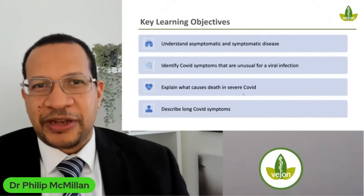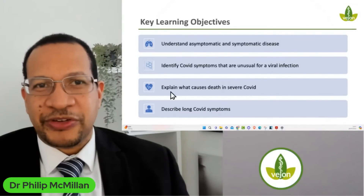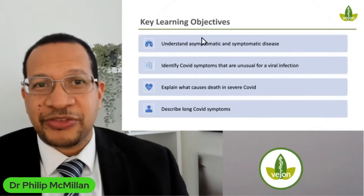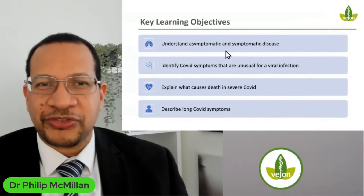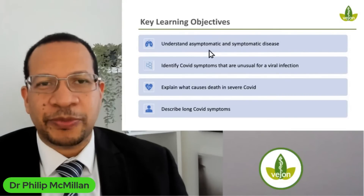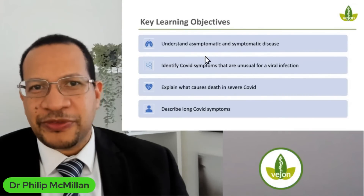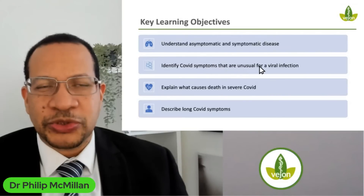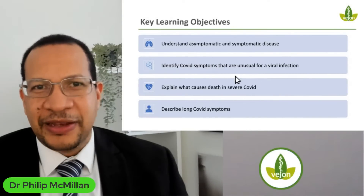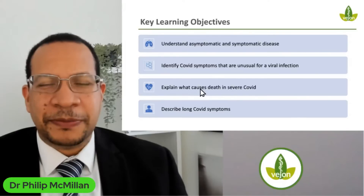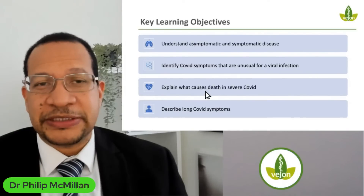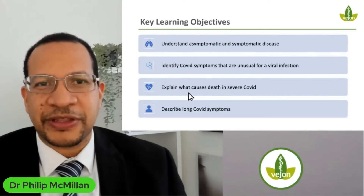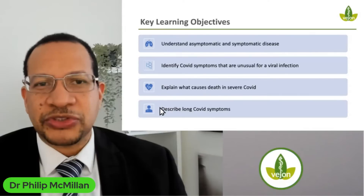The key things I'll be focused on in this presentation: the difference between asymptomatic and symptomatic disease, which causes a lot of confusion. The symptoms that are characteristic for COVID and somewhat unusual are covered throughout the presentation. We're going to explain why people die in severe COVID-19 — most people think it's just a viral infection, but it's far more complex than that. Critically, we also touch on long COVID and long COVID symptoms.